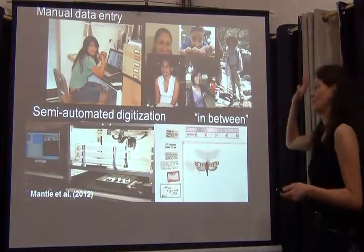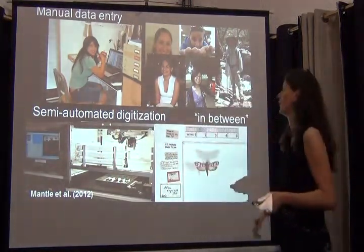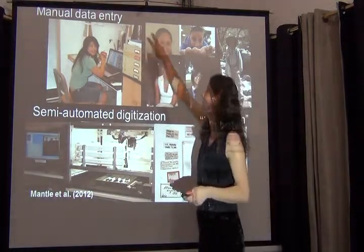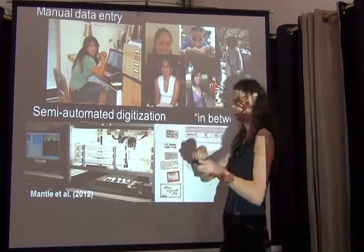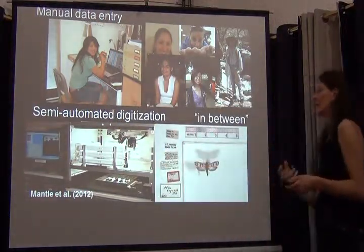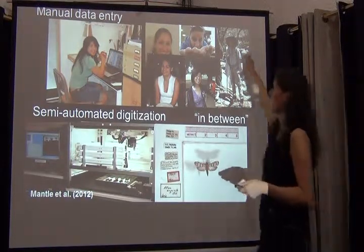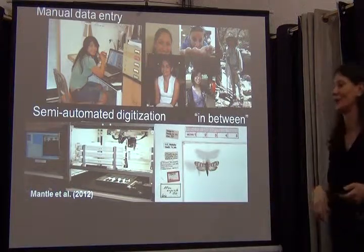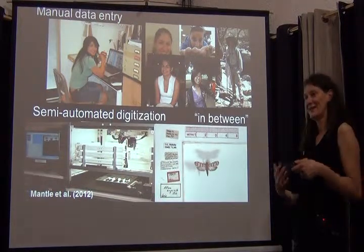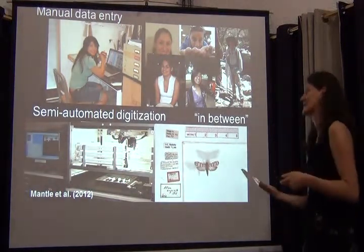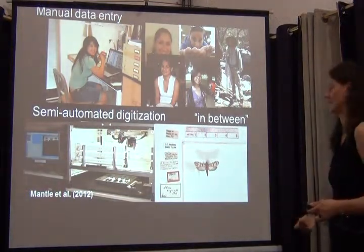Generally the idea is you can have manual data entry. I'm showing one of our former undergrad students sitting in front of a computer with a stack of insect drawers next to her. She would manually pull out every specimen, look at the data, and enter it into the database. What determines the speed of manual data entry is really how many bodies you can actually get to help you with the data entry.